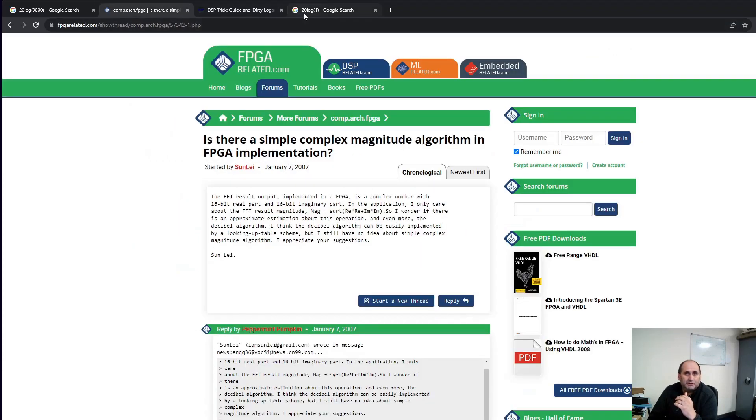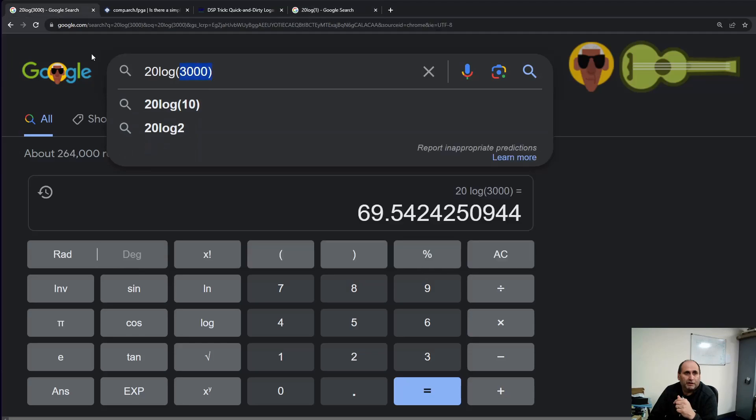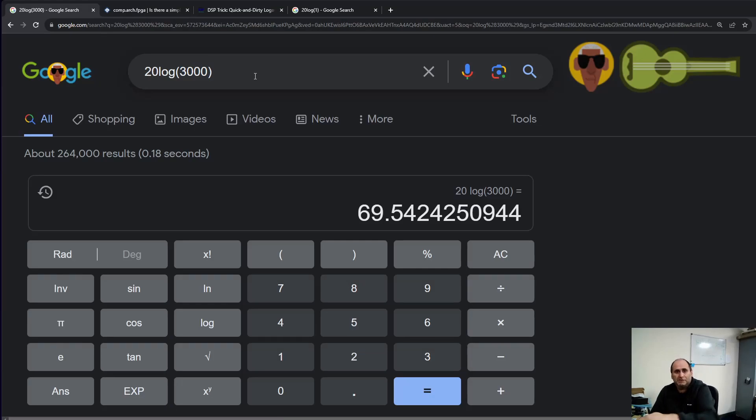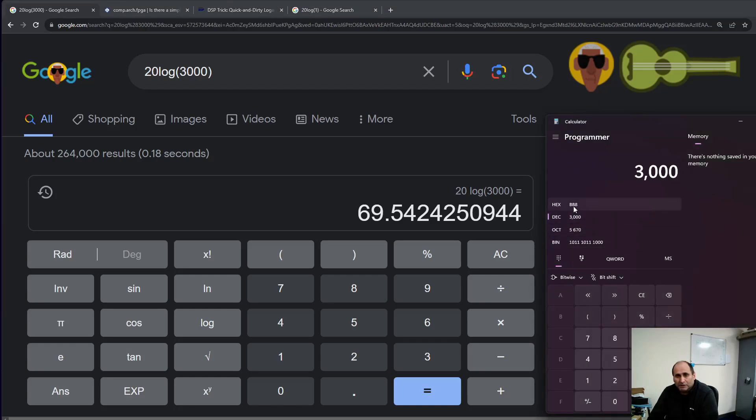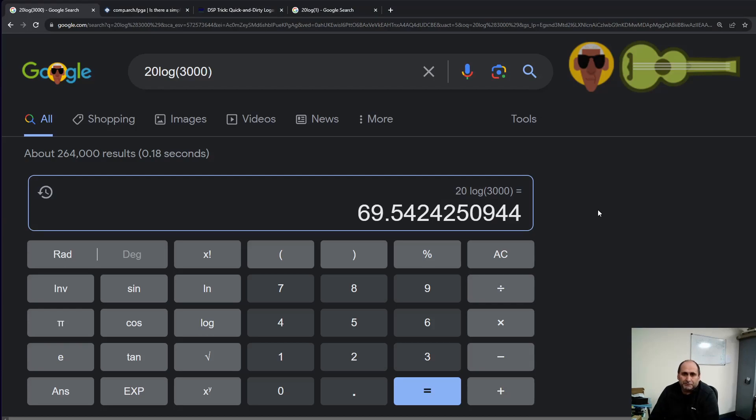So we know that every bit in this number that we try to make the logarithm, it counts for 6 dB. So if we know where our MSB is, we can actually multiply by 6 dB and we can calculate a rough value. And then if we look at the mantissa, we can calculate the finer value depending how many bits we take from the mantissa. So I'll make a very quick example here. I wrote a presentation. I hope I didn't lose half of the audience by now.